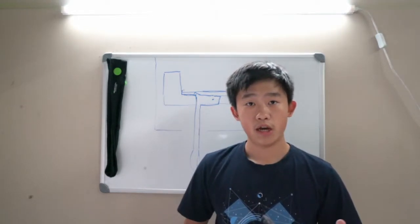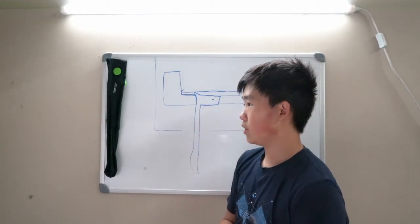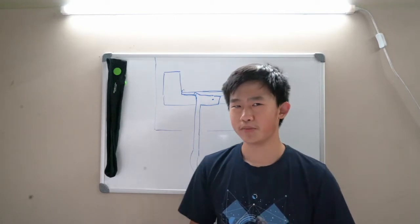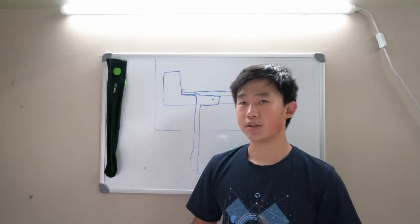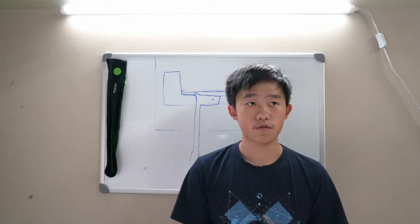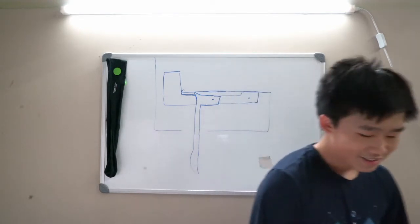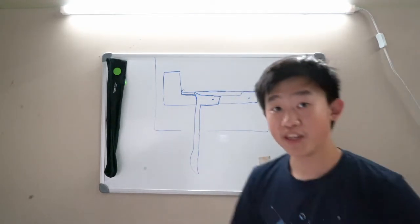Now we understand how the trigger mechanism works, which arguably is probably the most important part of the gun because without it you can't really fire. Well, I mean actually you could fire just by pulling the bolt back. Speaking of the bolt, we have to actually understand how the bolt works.